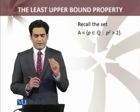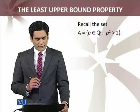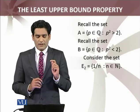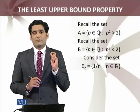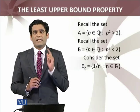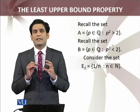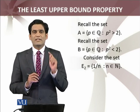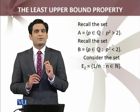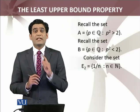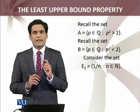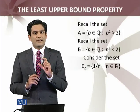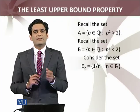Similarly, I had discussed set B — the set of rational numbers P such that P² < 2. We had proved that the smallest element cannot belong to the set of rational numbers. This means the infimum of this set also does not belong to the set of rational numbers.